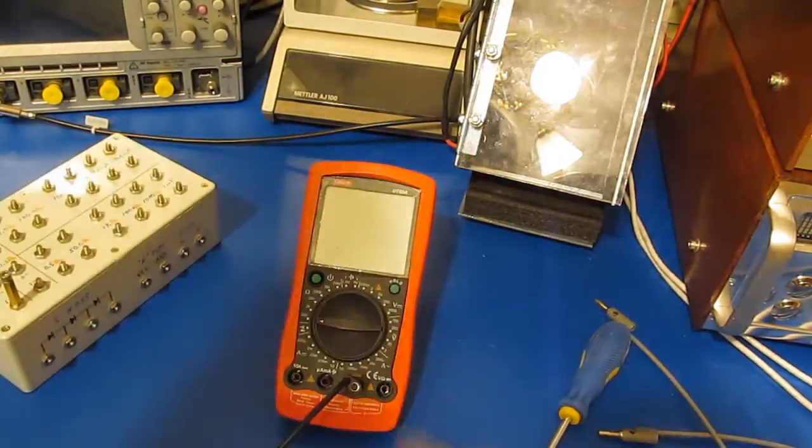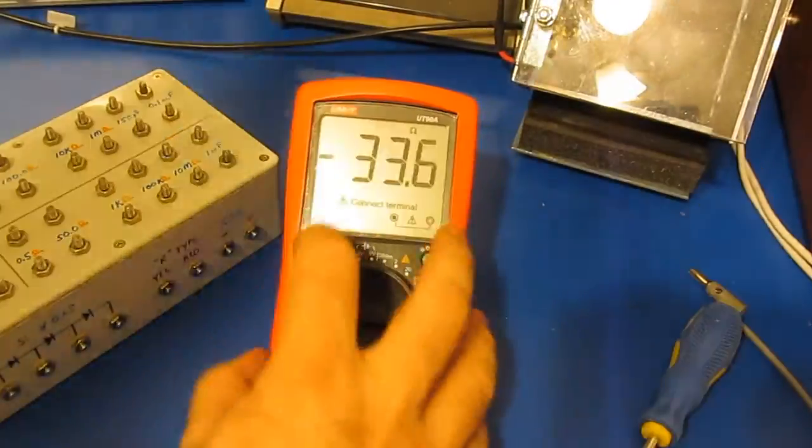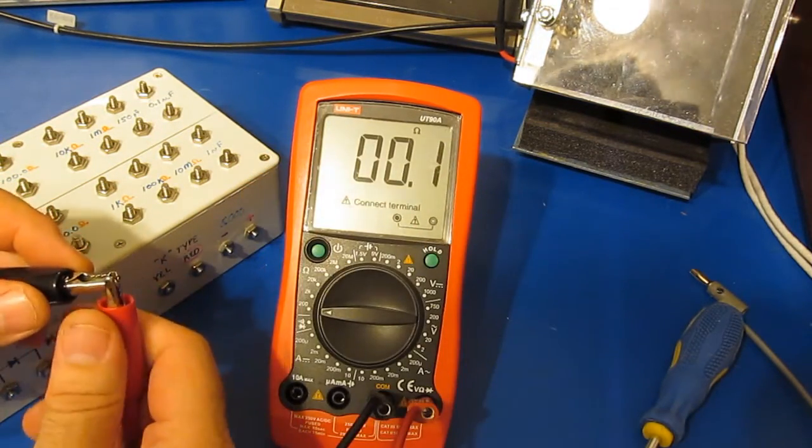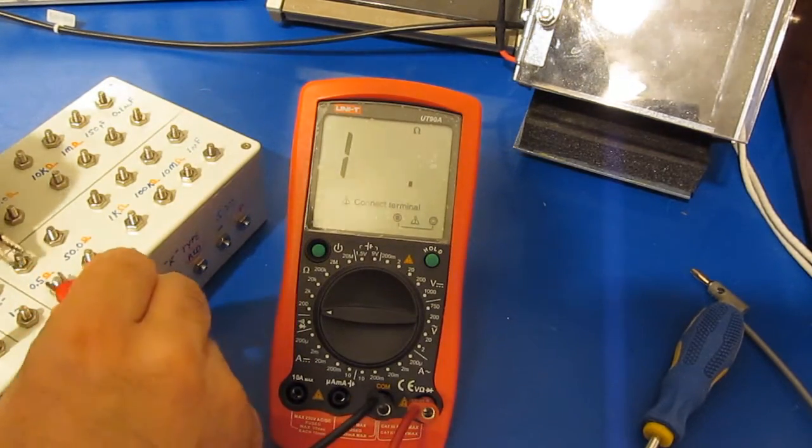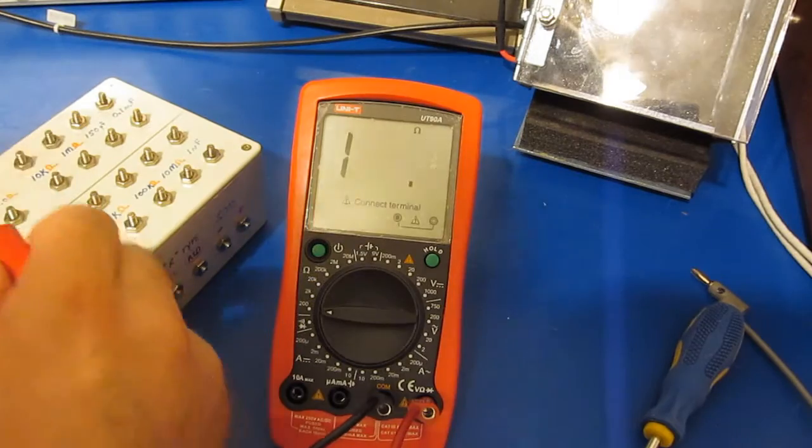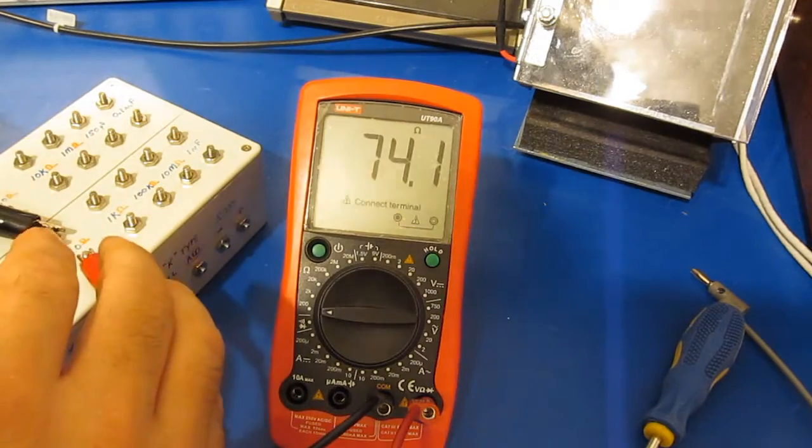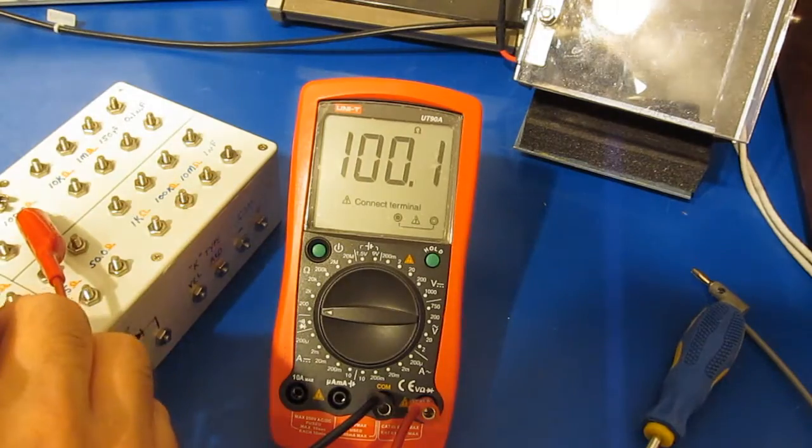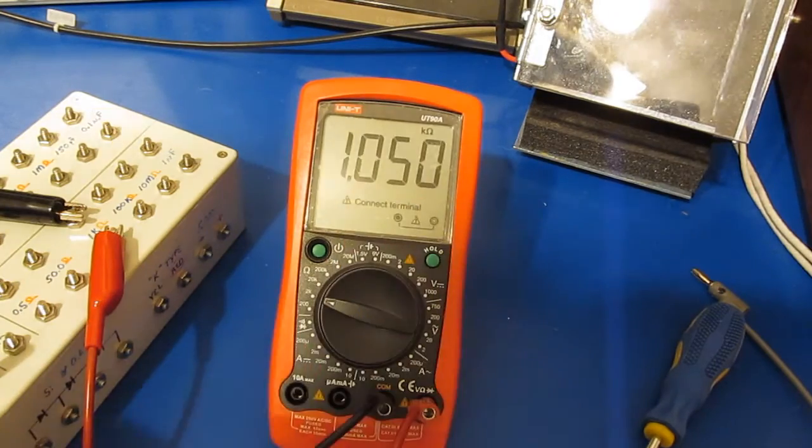And there we have it. So this is a short. I haven't adjusted this meter at all, so would not be surprised if it's a bit out of alignment. So this is a 0.5 ohm. This is a 1 ohm. 50 ohms. 100 ohm.